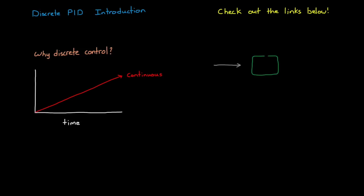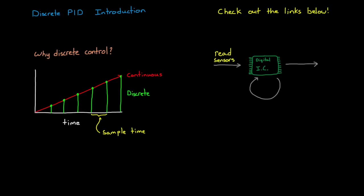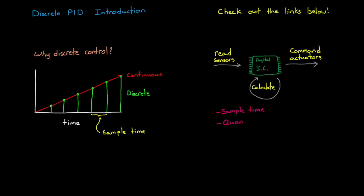So why discrete control? Why not always treat time as a continuous variable, like how we experience it in real life? The reason is that the controllers we design are usually run on digital computers, and digital computers don't run continuously — they update at each sample time. For example, if a computer process is running at 1 Hz, then once a second the controller reads the sensors, performs some calculations, and commands the actuators, which keep that command for the full second before receiving a new command. In contrast, a continuous or analog computer has an actuator command changing continuously and smoothly. Digital systems also have unique characteristics like quantization and transport delay, but I'm going to focus on sample time for the rest of this video.